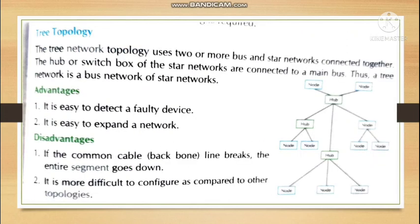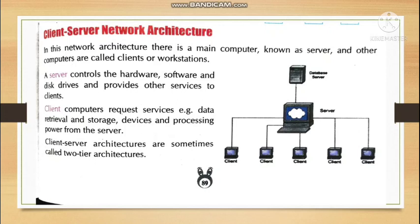Tree topology is a network of small star networks connected to a bus network. A common bus connects the hub or switch of each star network, so it is essentially a combination of bus and star topologies. Advantages: it is easy to detect a faulty device and easy to expand the network by connecting a new star network to the bus. Disadvantage: if the common cable line breaks, the entire segment goes down, and it is more difficult to configure compared to other topologies.